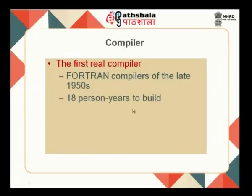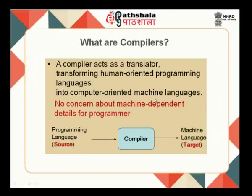Looking at some history of the compiler: the first real compiler was built for Fortran in the late 50s and it required 18 person-years to build. A compiler acts as a translator, transforming human-oriented programming languages into computer-oriented machine languages. The machine-dependent details are not required by the programmer — it is up to the compiler to know what the target machine is in order to translate high level language into assembly language.